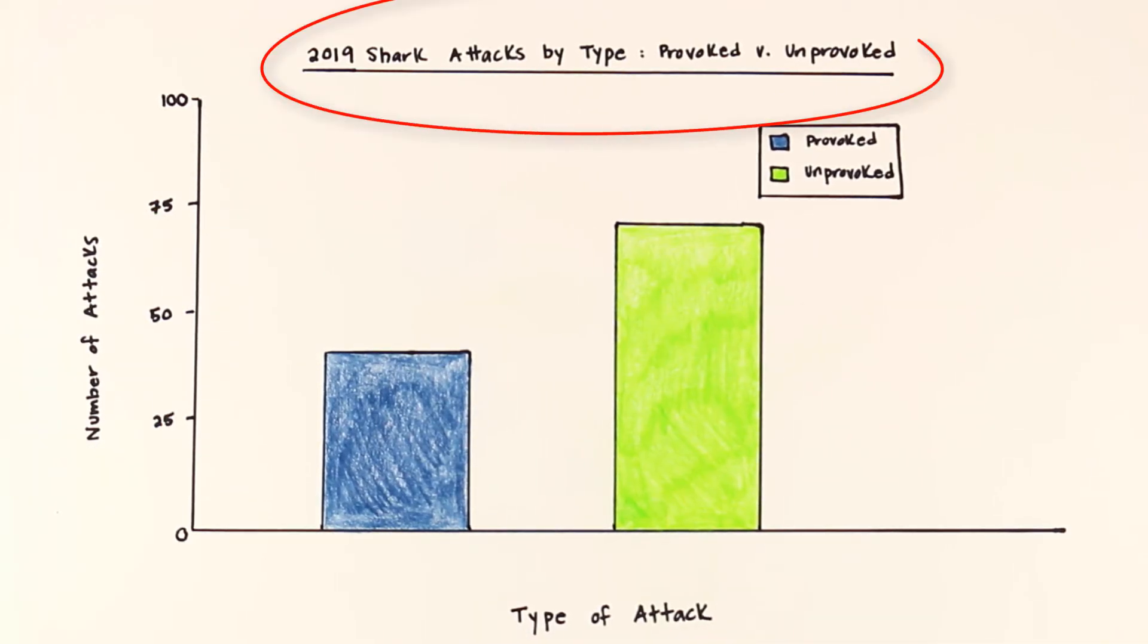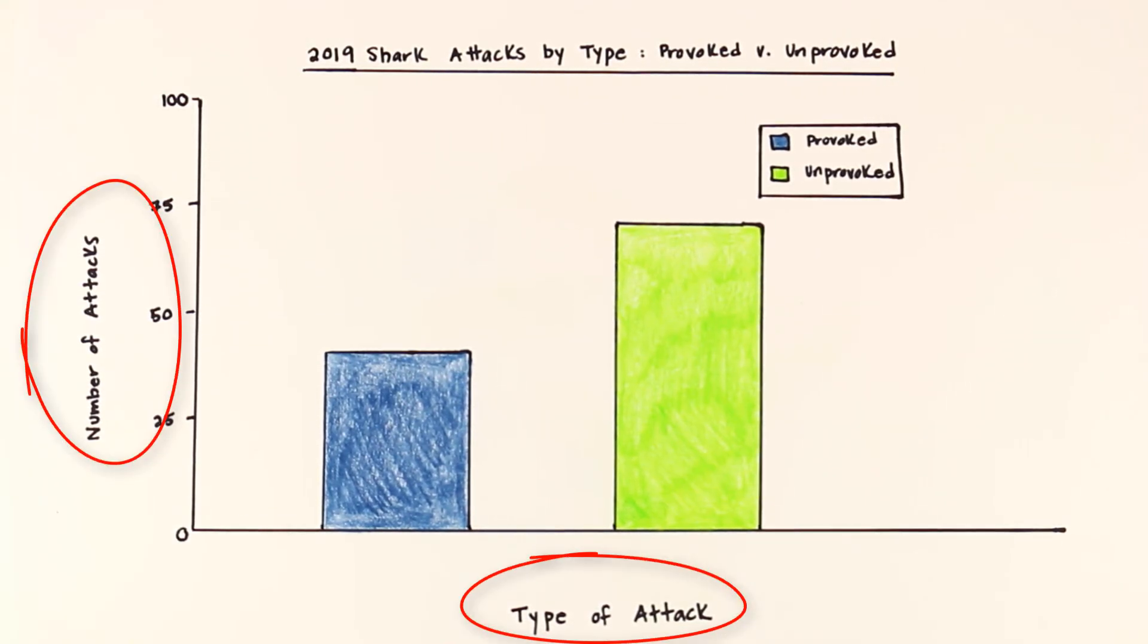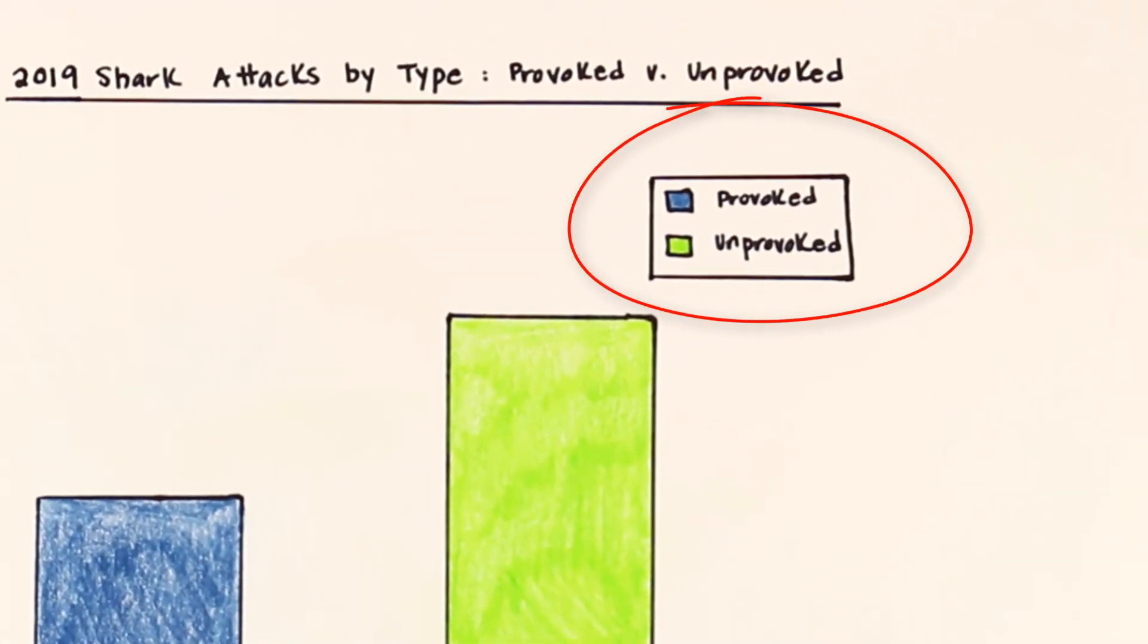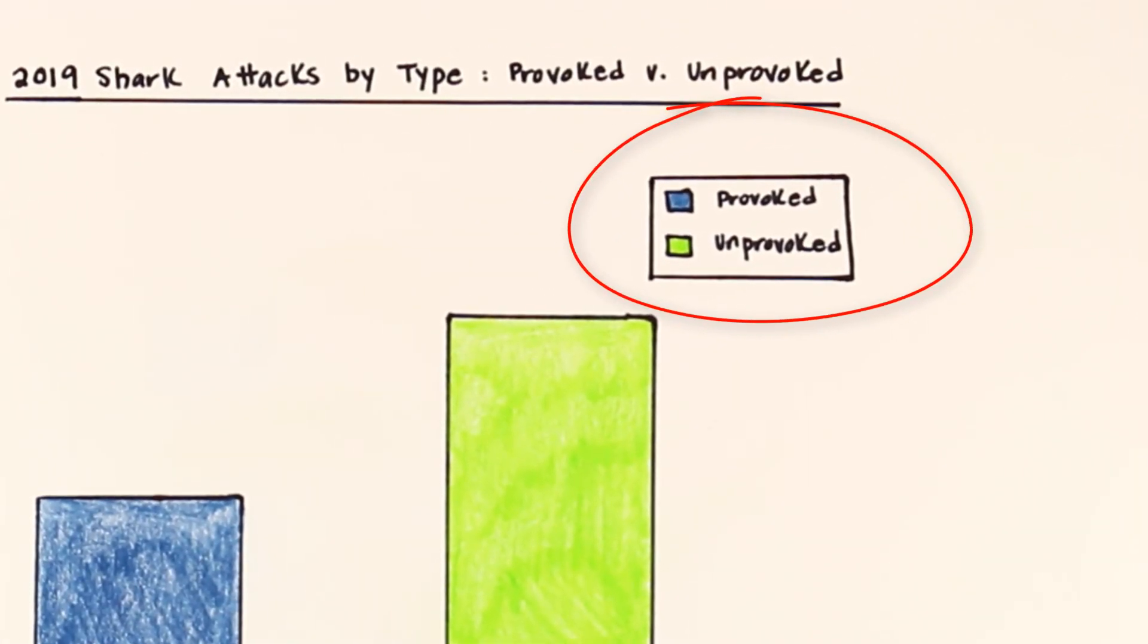On bar graphs, you'll also read the title to find out what the graph is about, and then read each axis to find out what is being compared. Some graphs also have a key that gives you additional information about what the graph is showing.